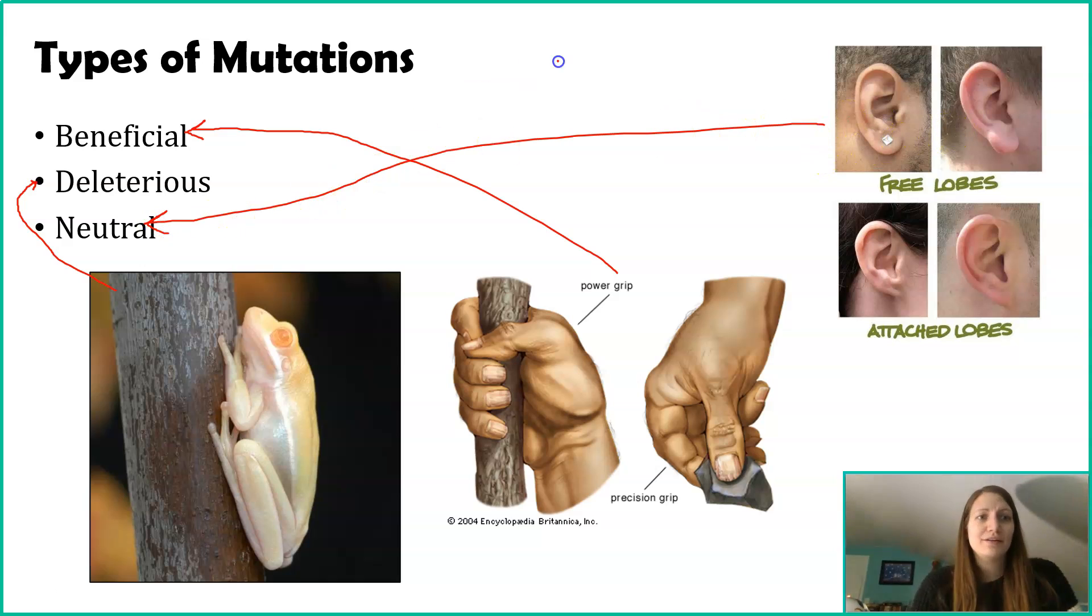And then finally, you have things like neutral mutations. Our earlobes kind of have this scale of free or dangly earlobes, and some people have more attached earlobes. It may have been mutations that kind of dictated how dangly or how attached your earlobes were, but it's not helping you to survive. It's also not killing you either. Whether you have a dangly or an attached earlobe, it was a mutation, but it's not helping me reproduce more, it's not hurting my chances of survival. So we refer to those as neutral mutations. Beneficial, deleterious, and neutral are referring to mutations at the physical scale. How do they actually manifest in that organism?